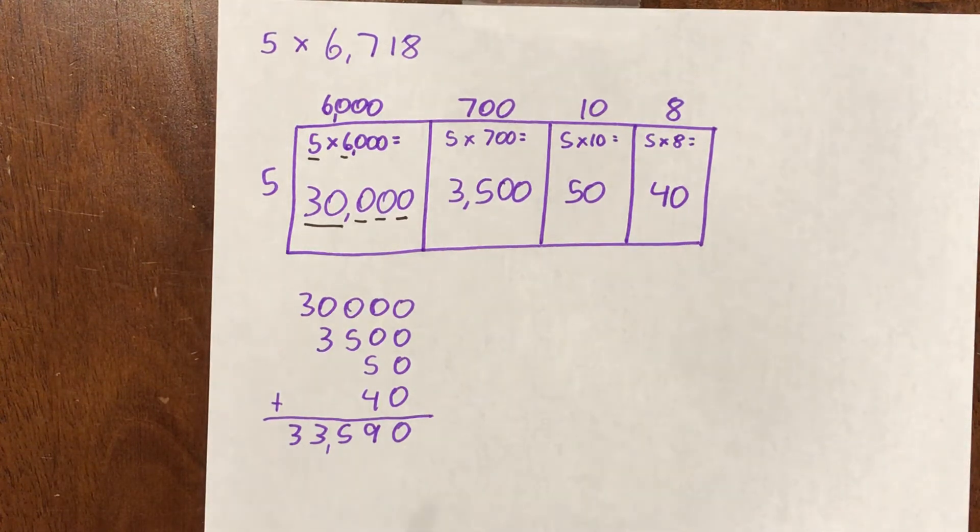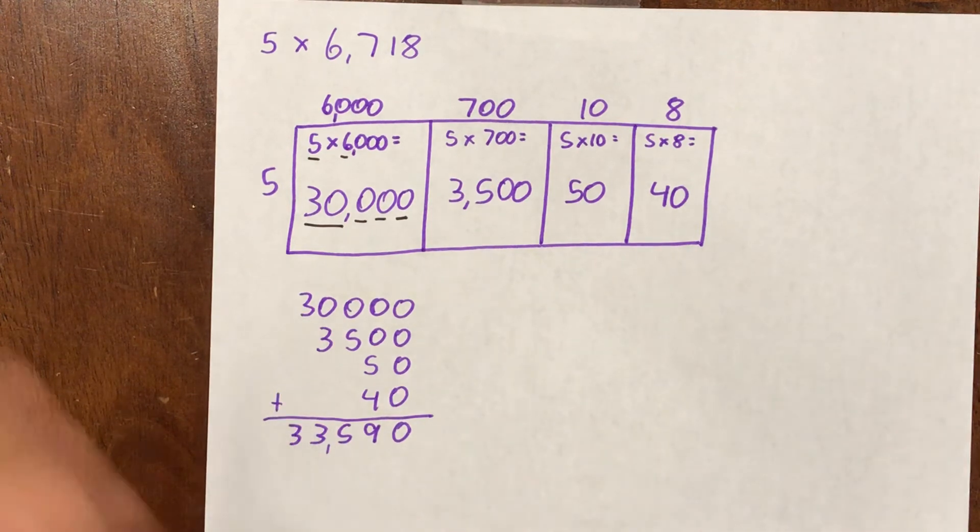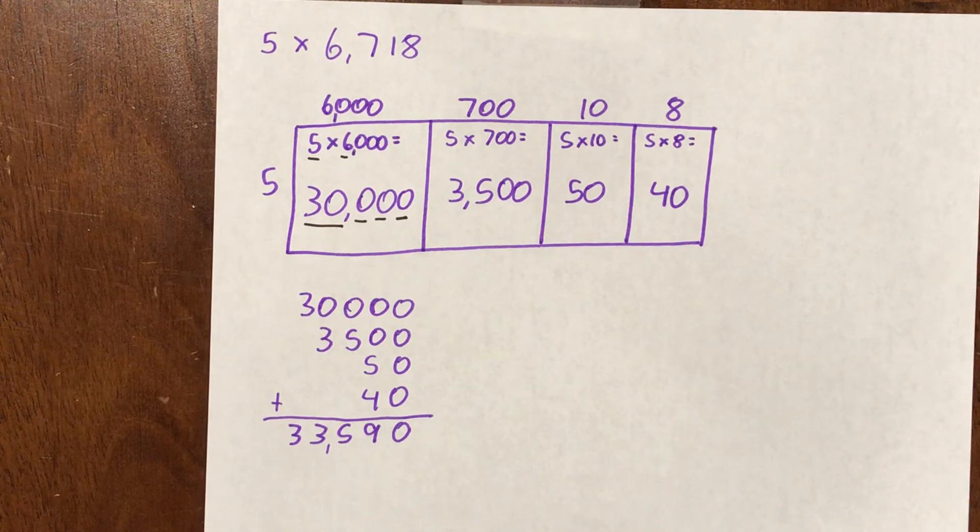All right, another question. Why didn't this rectangle here have a second row of partial products like we saw in the rectangles in the problem of the day? Say it out loud.